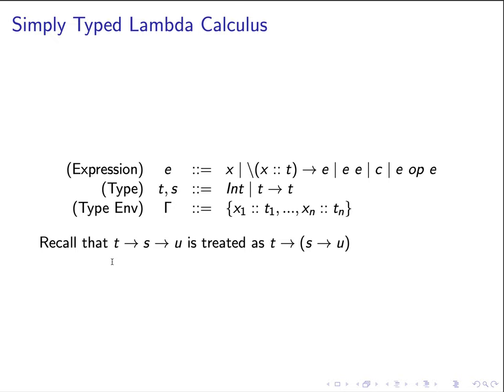For example, in this case, we have a function of type that goes from t as input and returns another function that takes another input of type s and finally returns the result of type u. So because we assume that the parenthesis is put around the second and third type argument here.